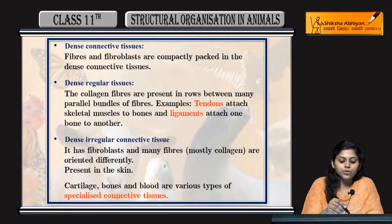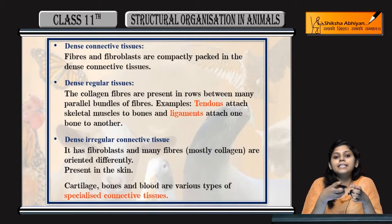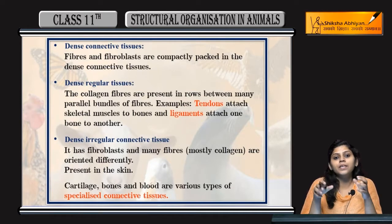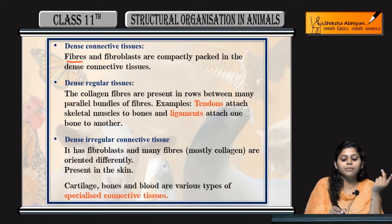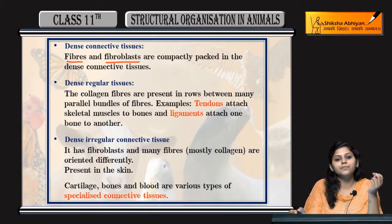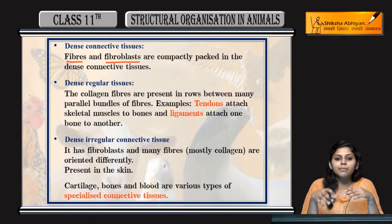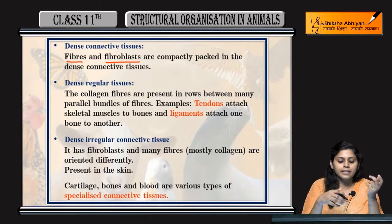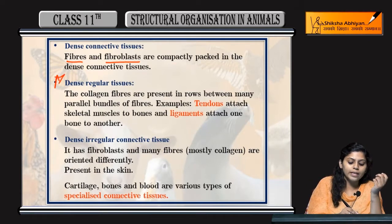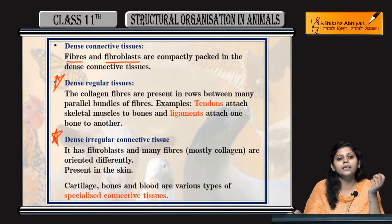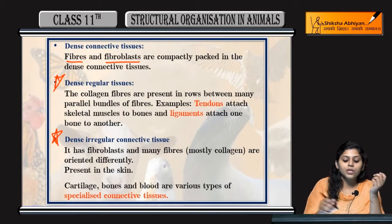Coming to dense connective tissues. Dense connective tissues means densely arranged, compact honge, jitne bhi cells present hain. Ab koon-koon se cells present honge dense connective tissues mein - fibers and fibroblast. In ki arrangement ke basis peh yeh doh categories mein classified hain: one is dense regular tissue, another one is dense irregular connective tissue.